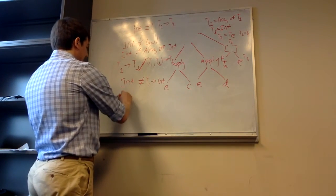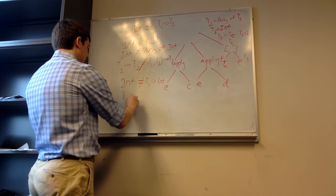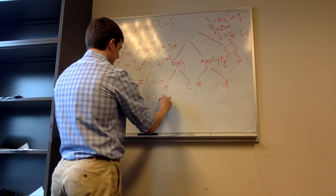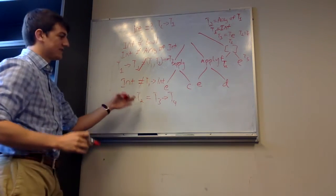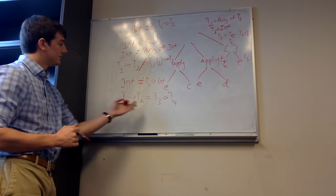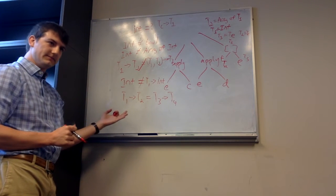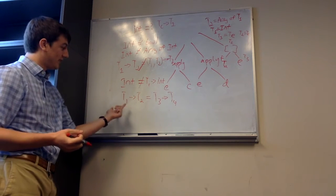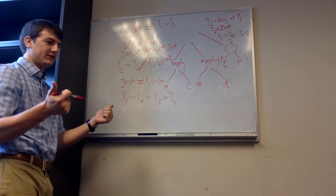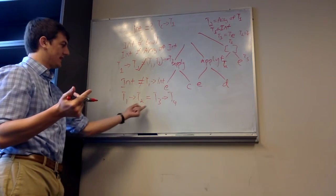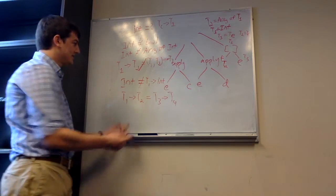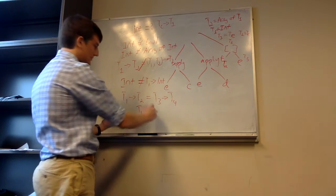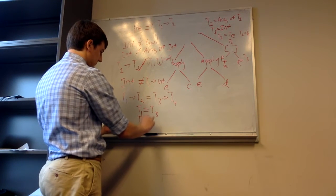Okay, some other wrinkles: let's say we have a function T1 returns type T2, and we have the constraint that that's equal to a function T3 returns type T4. So is this equal? Maybe — but this gives us additional constraints. We know they're both functions, and we know they both have to have the same types. So in order for this equality to hold, T1 has to equal T3, and T2 has to equal T4.